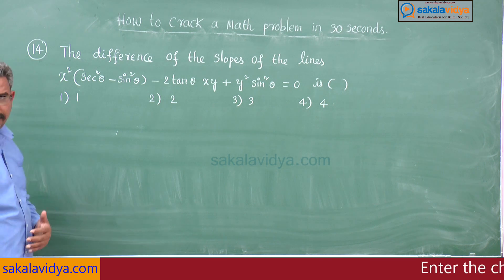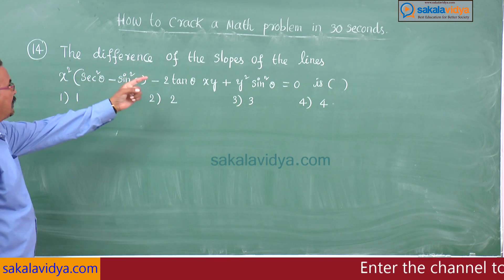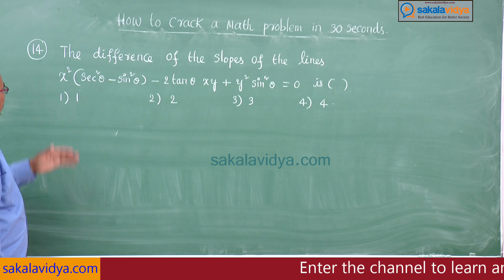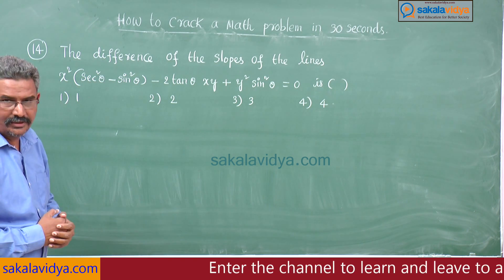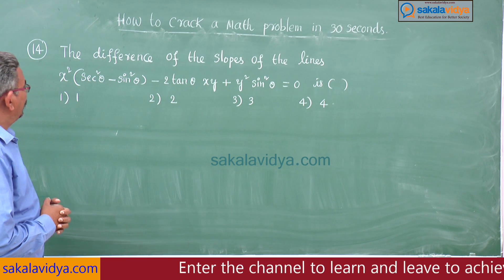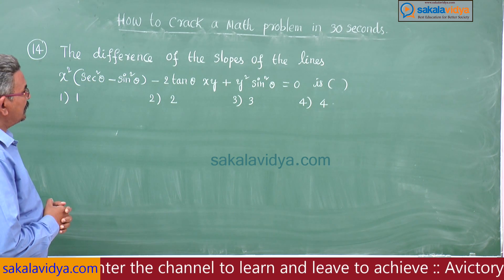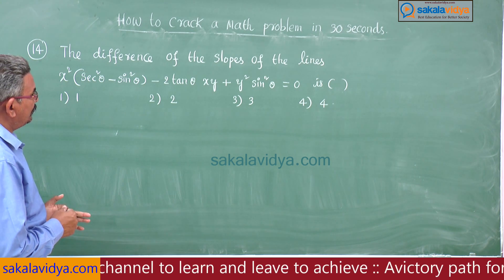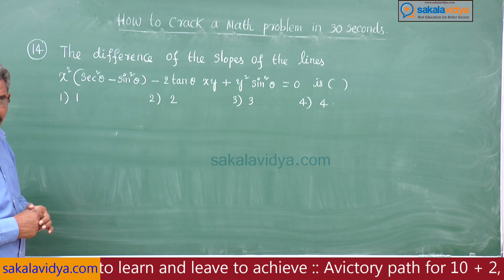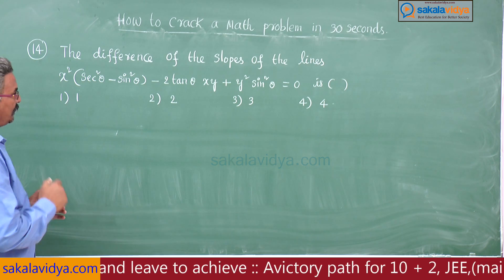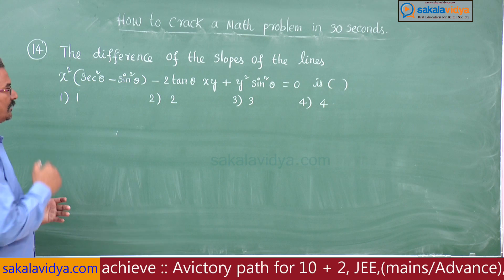14th problem: the difference of the slopes of the lines x²(sec²θ - sin²θ) - 2tanθ·xy + y²sin²θ = 0. Options: first option 1, second option 2, third option 3, fourth option 4.